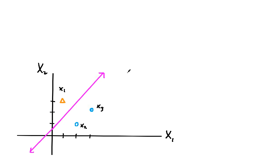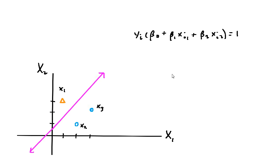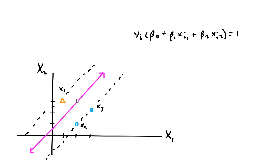Since alpha1, alpha2, and alpha3 are all non-zero, we have that each x sub i satisfies this equation. Hence x1, x2, and x3 all lie on the margin and are therefore support vectors, as you can see from the graph. Imagine that we draw the edges of this slab — x1, x2, and x3 all lie on the edges of this slab.